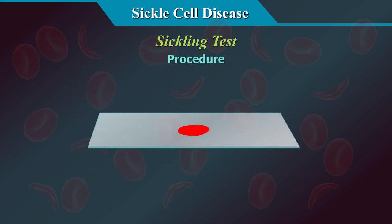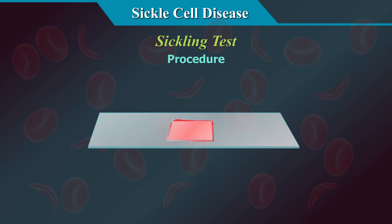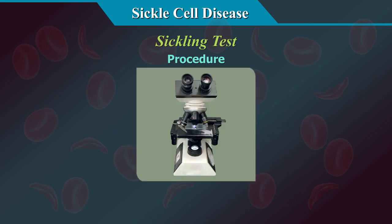Procedure: place a small drop of fresh anticoagulated blood on a slide. Add one drop of the reducing substance, i.e. sodium metabisulphite, and cover immediately with a cover slip. Seal the moist preparation with petroleum jelly or paraffin. Place in a wet chamber and incubate at 37°C for one hour. Examine under low and high power objectives of a microscope to look for sickling.